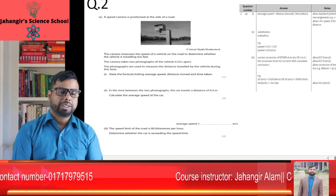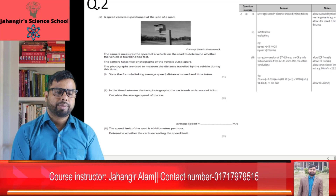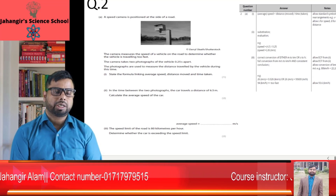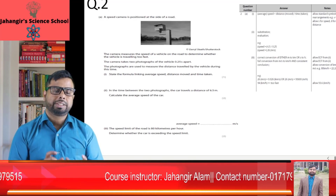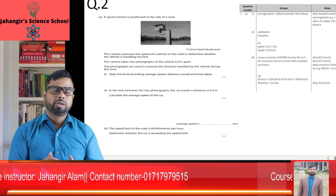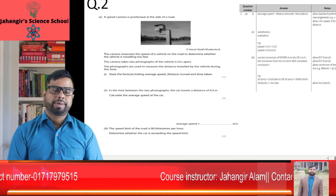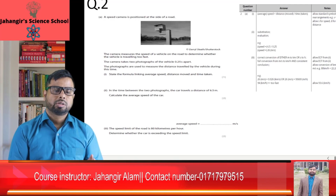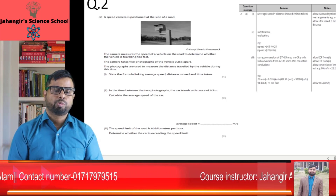Question number 3 — the speed limit of the road is 80 km per hour. Determine whether the car is exceeding the speed limit. We need to convert 80 km/h into metres per second. 80 km means 80,000 metres. 80,000 metres divided by 3600 seconds equals 22.2 metres per second. The average speed of the vehicle is 26 metres per second, which is more than the speed limit of 22.2 metres per second, so the vehicle is exceeding the speed limit.